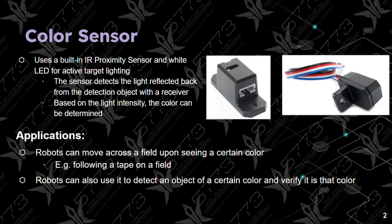So what can it be used for? Some applications include moving across a field based on a certain color. For example, it could follow a blue tape or a red tape on a field. Robots can also use it to detect an object of a certain color, verify if it is that color, and perform certain actions based on the color.